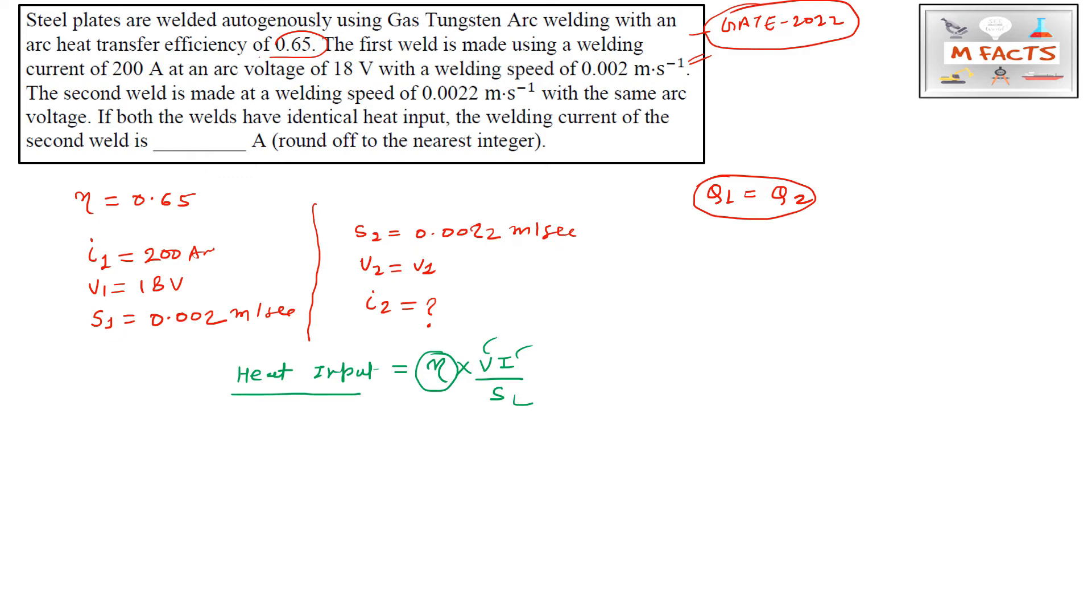From the heat input equation, since Q₁ = Q₂, we can write: η V₁ i₁ / S₁ = η V₂ i₂ / S₂. Since η cancels and V₂ = V₁, we get: i₁ / S₁ = i₂ / S₂. Now we'll substitute the values.